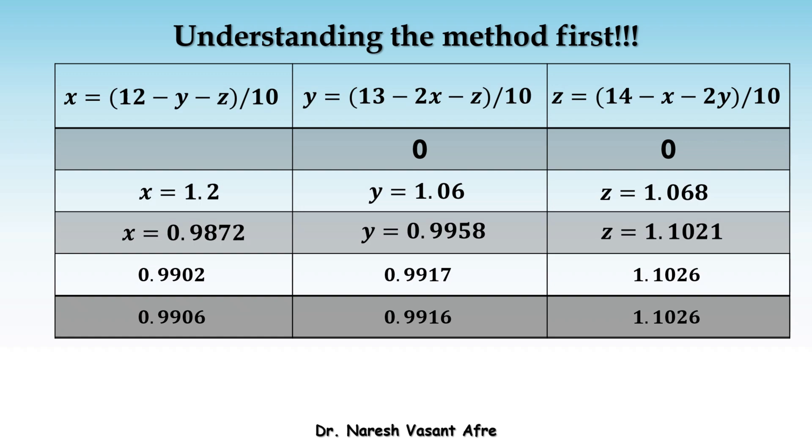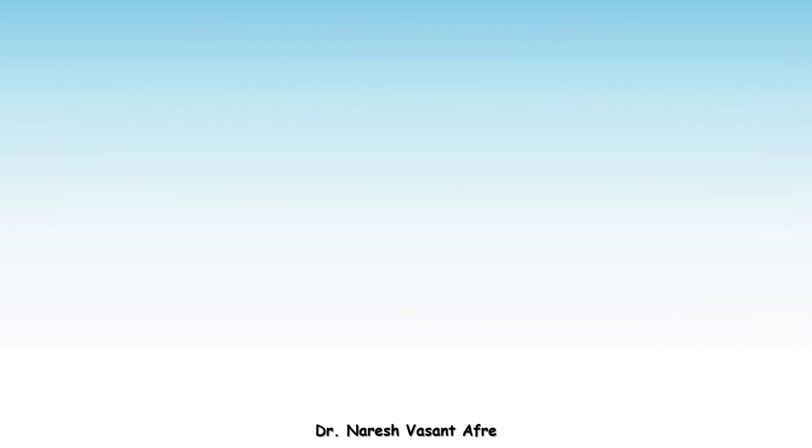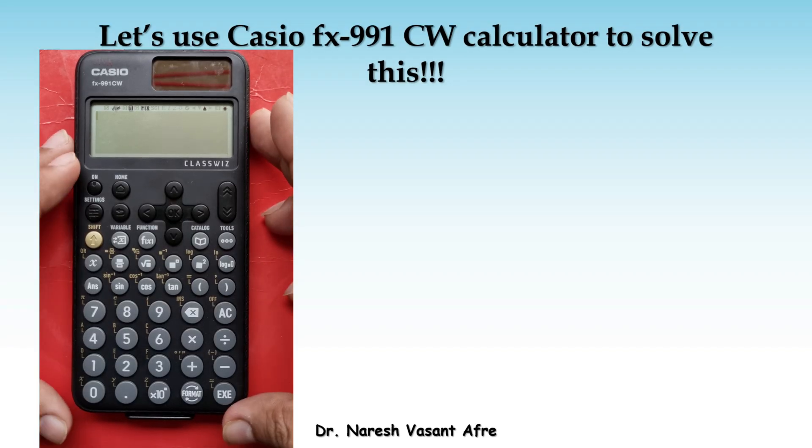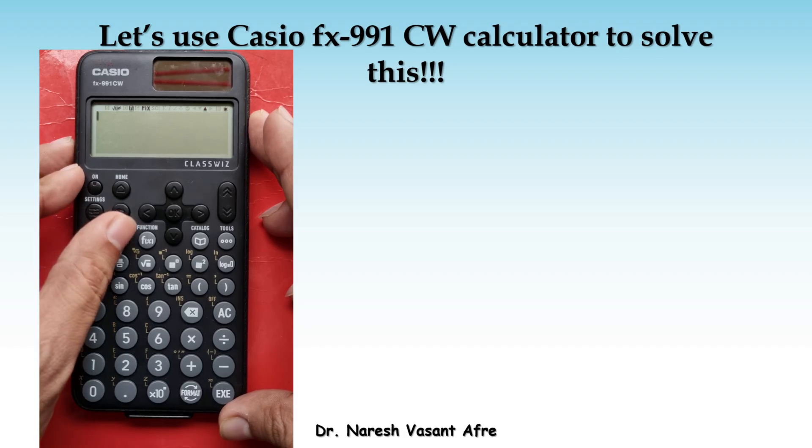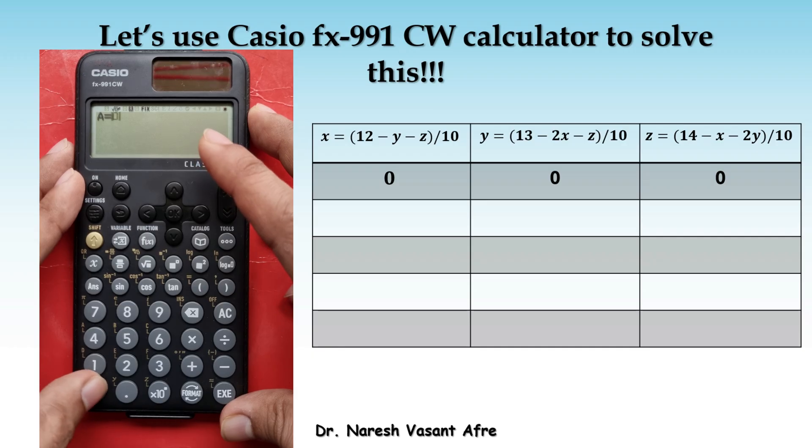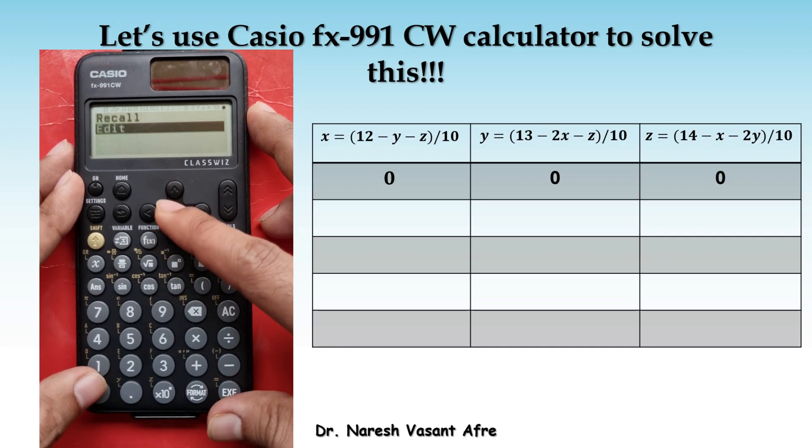And we can keep on doing this until two consecutive iterations gives us same answer. So, this is the Gauss Seidel method. Let us use Casio FX991CW calculator to solve this. We are going to use the variables ABC of the calculator for the variables XYZ of the system. And we are going to initialize them by 0.